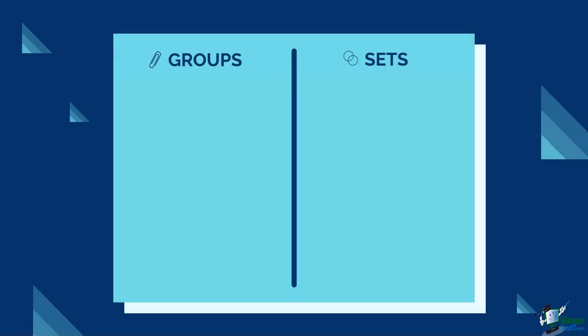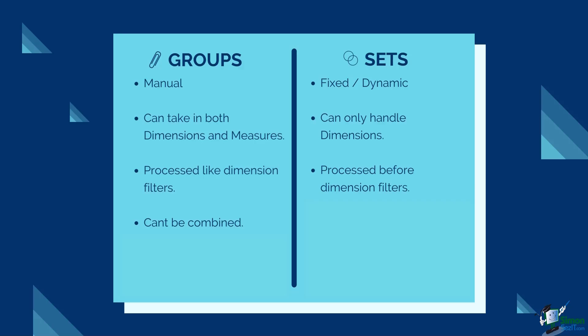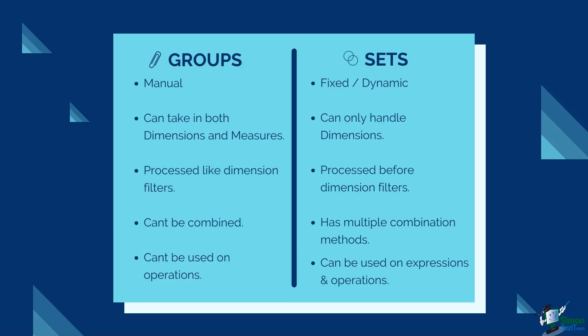How do groups differ from sets? First, groups are only manual or fixed — they have a specific list of manually selected members which cannot be changed by the audience. Sets, on the other hand, can be either fixed or dynamic. Groups can take in both dimensions and measures, but sets can only handle dimension fields. In terms of processing, groups are processed like dimension filters, while sets take more priority as they are processed before dimension filters. Groups can't be combined, while sets have various methods for combination. Lastly, sets can be used in expressions or operations, while groups cannot.